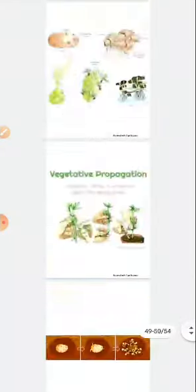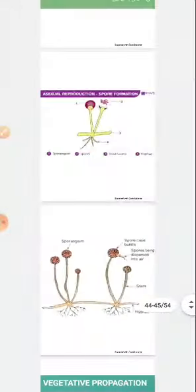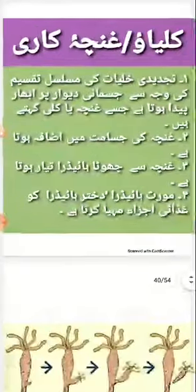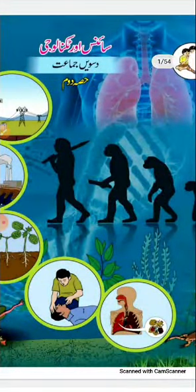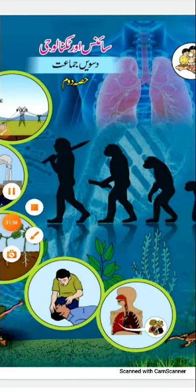So children, in this way through this video we have learned about the first part of our lesson — asexual reproduction — and how it occurs in unicellular and multicellular organisms. We tried to understand the types and methods. I hope you all understood my explanation. I will present the next part of this lesson very soon. Until then, Allah Hafiz, stay safe, stay home.